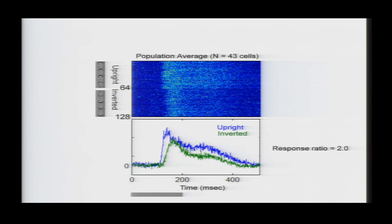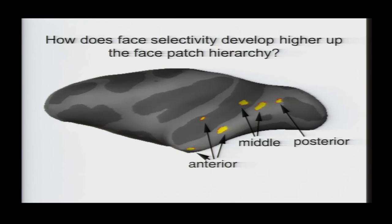And, as I suggested earlier, the cells respond more strongly to upright than to inverted faces, and you can see that here. This is a population of 43 cells, and this responds to 64 upright faces, and 64 inverted versions of the same faces. And you can see that the response to the inverted faces is slower, it's weaker, and it's more transient than that to the upright faces.